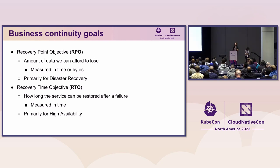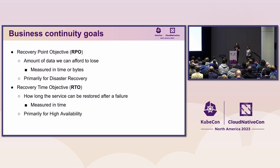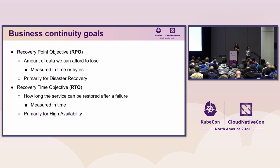Planning a business continuity solution always starts with defining the goal to achieve as an organization. Two primary metrics have emerged: the first is RPO, or recovery point objective, which is the amount of data we can afford to lose after a failure — and RPO is primarily a disaster recovery metric. The second is RTO, or recovery time objective, which is the time needed to restore a service after a failure — and RTO is primarily a high availability metric. It's only through risk management and cost efficiency that organizations find the right balance between these two opposing metrics.